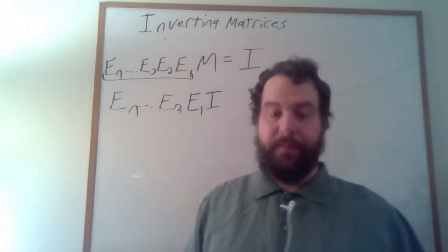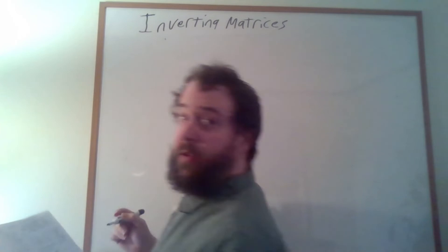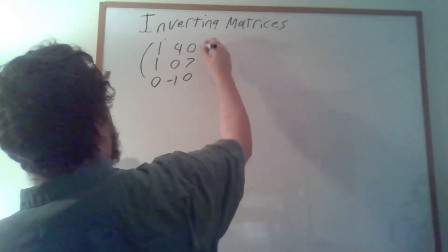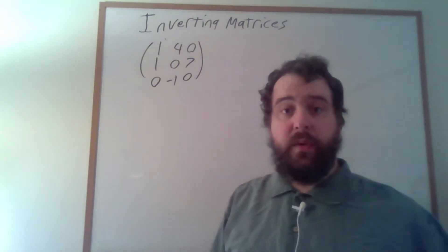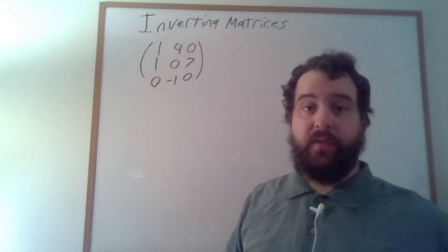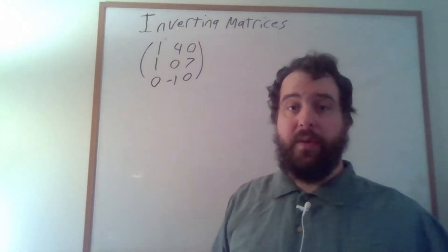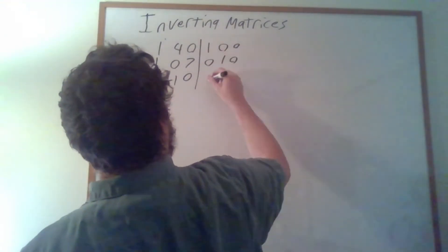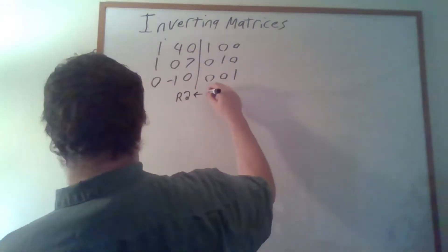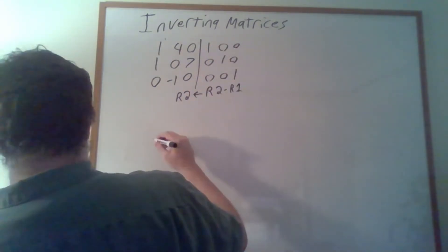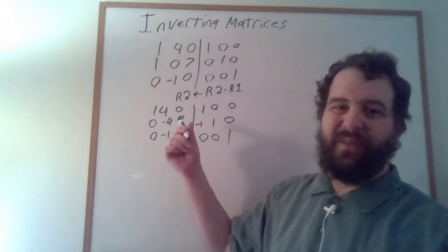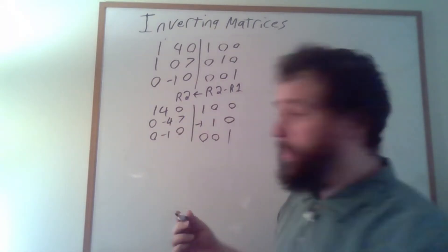Let's try out an example. Suppose that we want to invert the matrix [1, 4, 0 / 1, 0, 7 / 0, -1, 0]. We're going to want to apply row operations to get this into fully reduced row echelon form and at the same time apply those same row operations to the identity matrix. Our first step is to get rid of this one here — we're going to use row 1 to cancel that out. Then, this third row looks like something we'd actually like to have in the second row, so I'm just going to swap them.